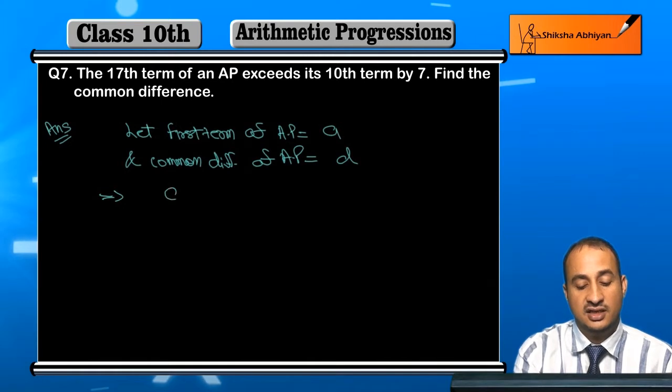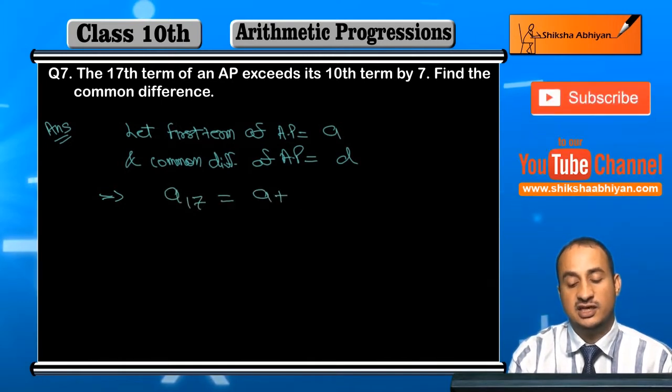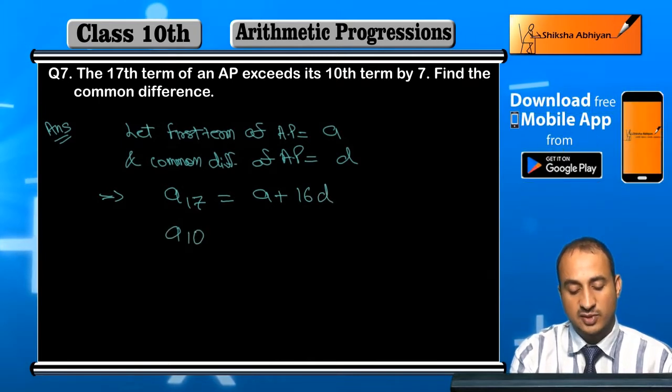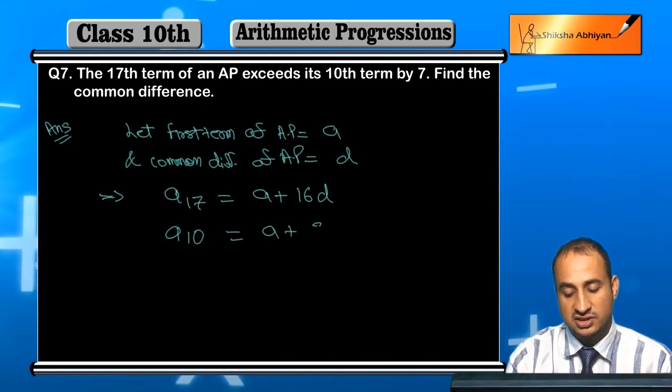So this implies that A17, the 17th term will be A plus 17 minus 1, which is 16D. And if I take the tenth term, the tenth term will be A plus 9D.